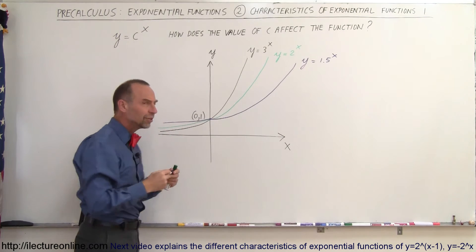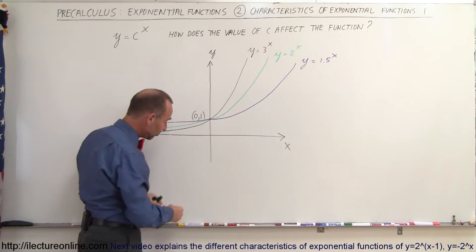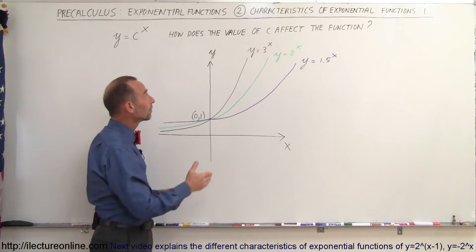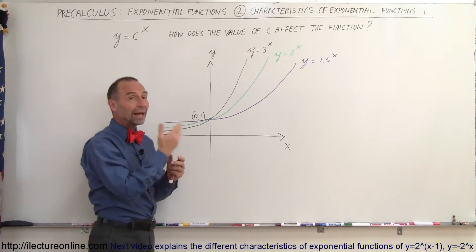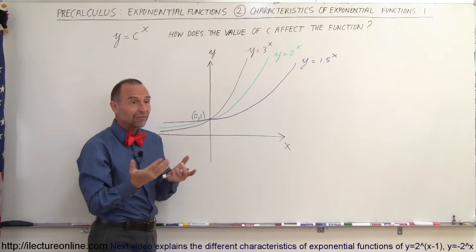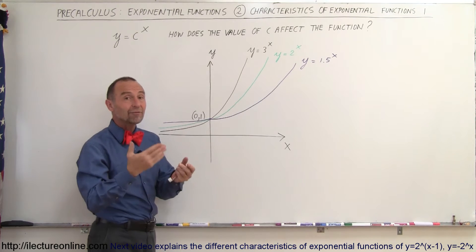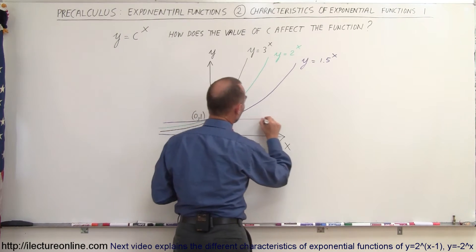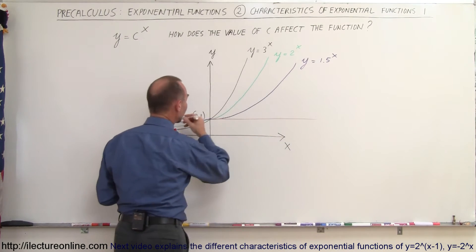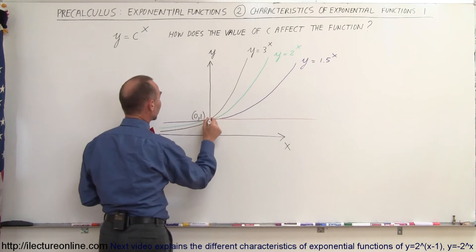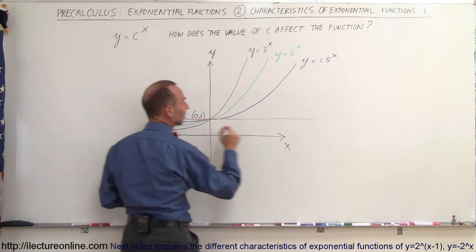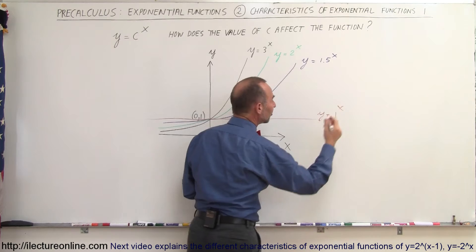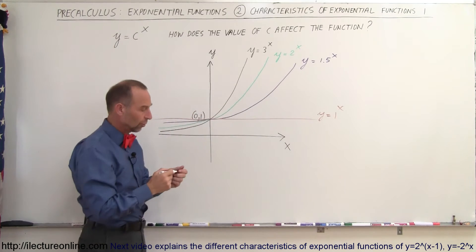What if the base becomes 1? That's interesting — you typically don't see that in a textbook. But whenever you have 1 raised to the x power, 1 raised to any value will still equal 1. That means you simply get a straight line. When x becomes a negative number, it doesn't matter — you're still going to get a straight line. So y equals 1 to the x power is simply a flat line at y equals 1.